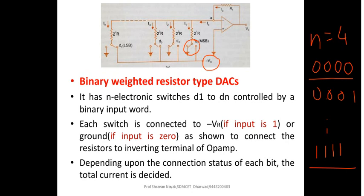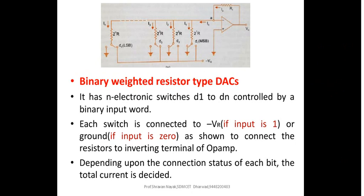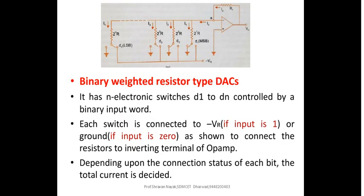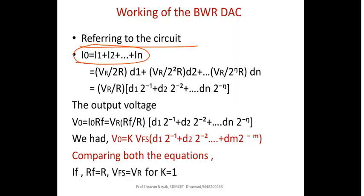Let us see the functional operation of this 4-bit DAC. Referring to the circuit, the total current I0 equals I1 plus I2 plus I3 plus I4. Whether I1, I2, or I3 is present depends upon whether the corresponding switch is connected to minus Vr or to ground. The subsequent equations represent the same thing.